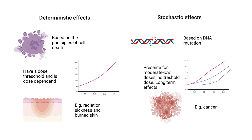It's important to know that there are two different effects of radiation. There are deterministic effects, which are the acute effects based on the principle of cell death. They have a dose threshold, so these will only happen once a certain dose is reached — examples include radiation sickness and burnt skin — and you can always shield against these. They are more manageable. The stochastic effect is based on DNA mutation and is always present in the background. There is no threshold, so your risk increases with working with radioactivity every day, but it differs from person to person when these effects will manifest. An example is cancer or mutation.